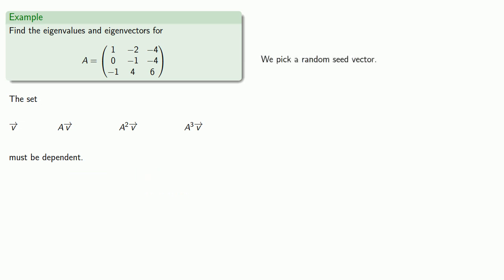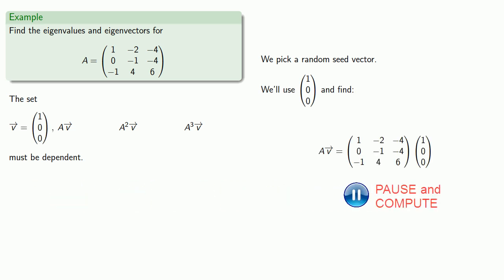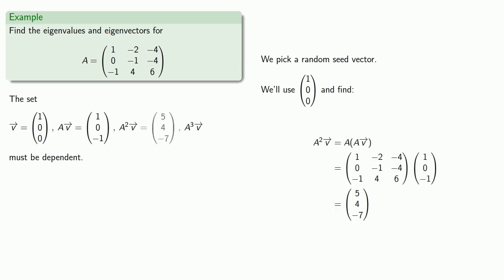So I'll pick a random seed vector, about 1, 0, 0, and we'll find v, Av, A squared v, A cubed v.